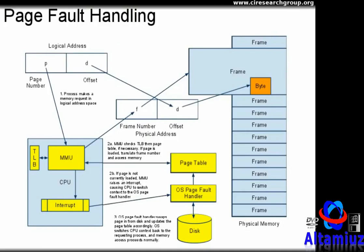The address translation process gains a few steps when paging is utilized. A process makes a memory request using a logical address in its private address space as usual. The MMU first checks the translation look-aside buffer to determine if the page-to-frame mapping is present. In the case of a TLB miss, the MMU must consult the page table to find the mapping. Once the mapping from page number to frame number is known, the MMU must next verify that the page is actually loaded in physical RAM. If the corresponding frame is available in RAM, the memory access proceeds as normal. However, if the corresponding frame is not in memory, the MMU generates a page fault, which is essentially a type of interrupt. The page fault causes the operating system to switch context to the page fault handling routine, which retrieves the corresponding memory contents from the backing store. Once this process is complete, the OS changes the CPU context back to the original process, and the memory access proceeds as normal.